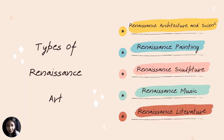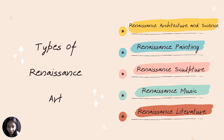Lastly, the types of renaissance arts, which will be tackled more deeply later — a brief overview: these are renaissance architecture and science, renaissance painting, renaissance sculpture, renaissance music, and renaissance literature.